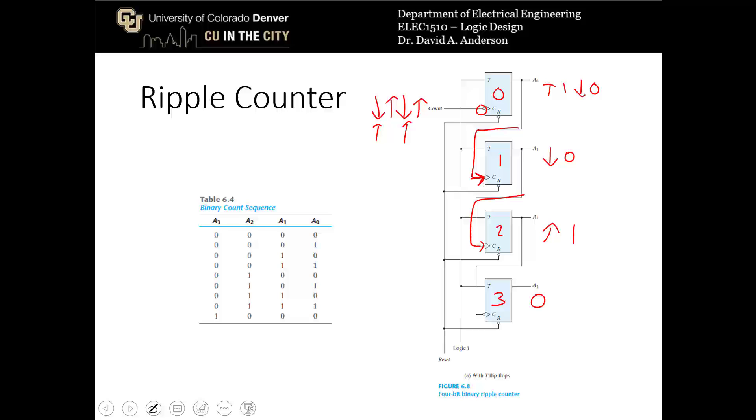So before we did anything, we had 0, 0, 0, 0, and then after one falling edge, we had 0, 0, 0, 1. After two falling edges, we have 0, 0, 1, 0, and so on for the rest of the states. And this will just keep going until the whole system resets.